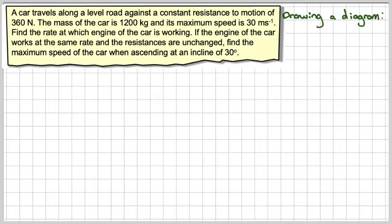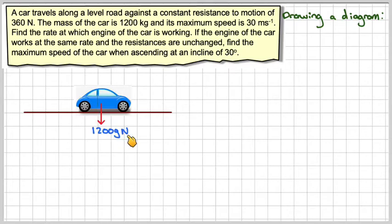We draw a diagram. We draw a car here. We're drawing a force diagram. There will be the weight acting downward, 1,200 newtons. There will be a normal reaction to that, and then there is a resistance to motion of 360 newtons.